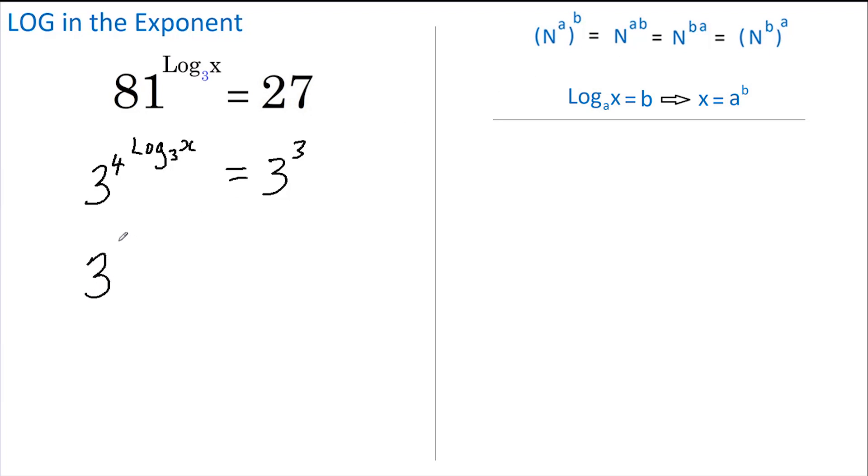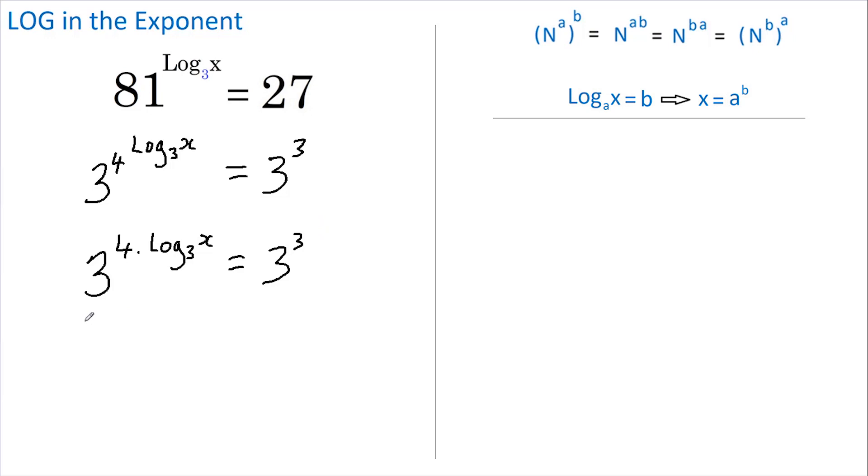This equals 3 to the 3, and now as we have identical bases we can just set the powers equal to each other. So 4 log base 3 of x equals 3.